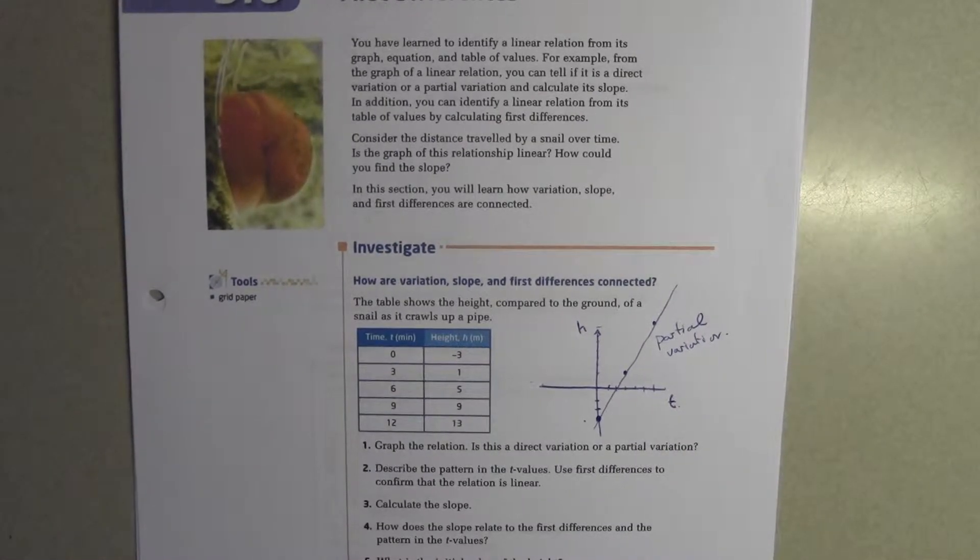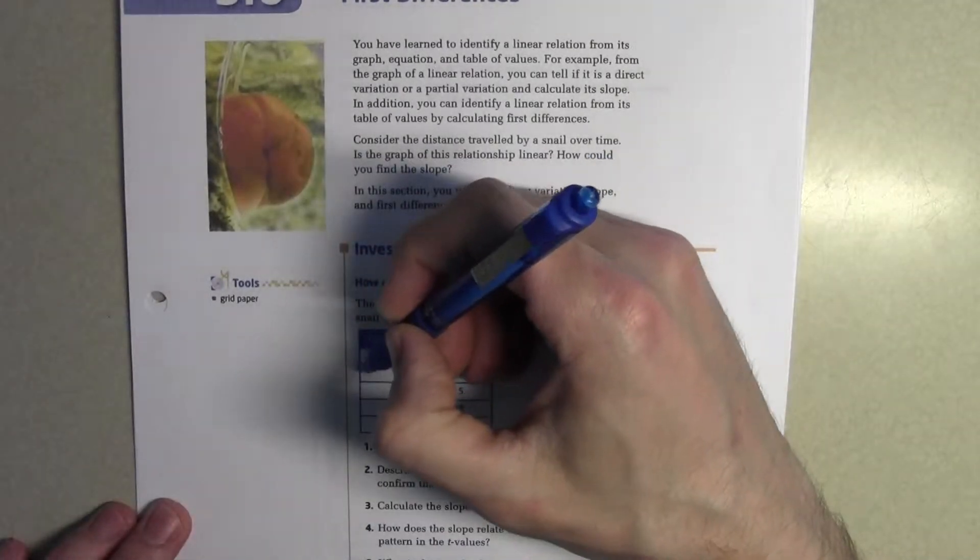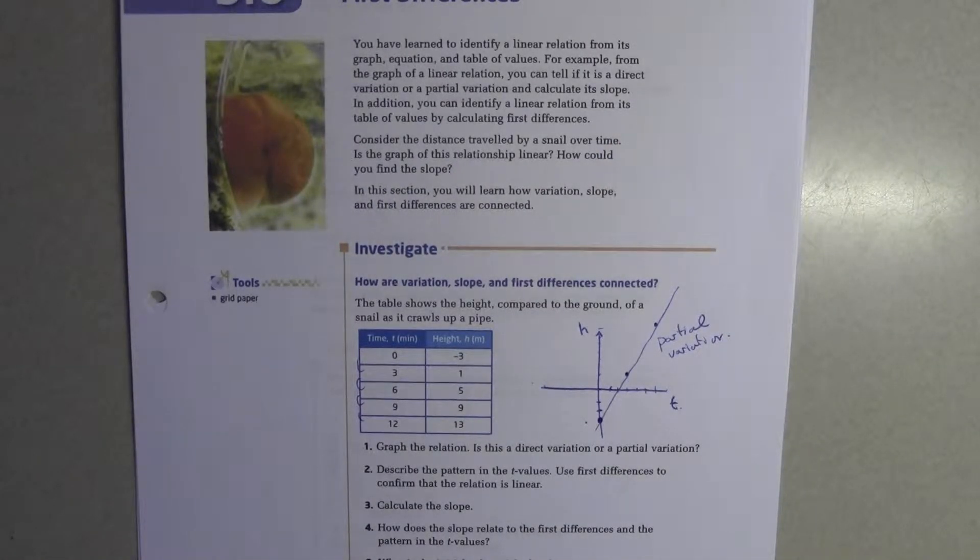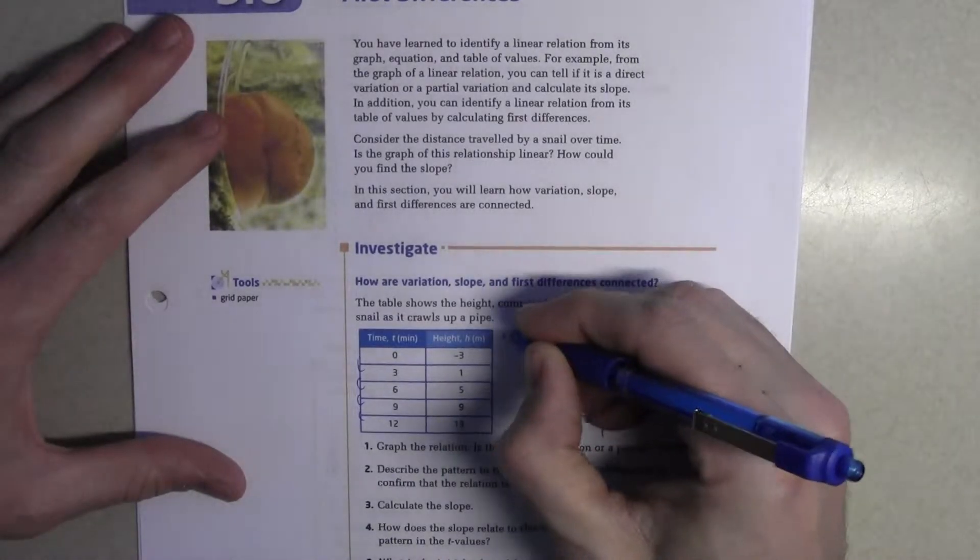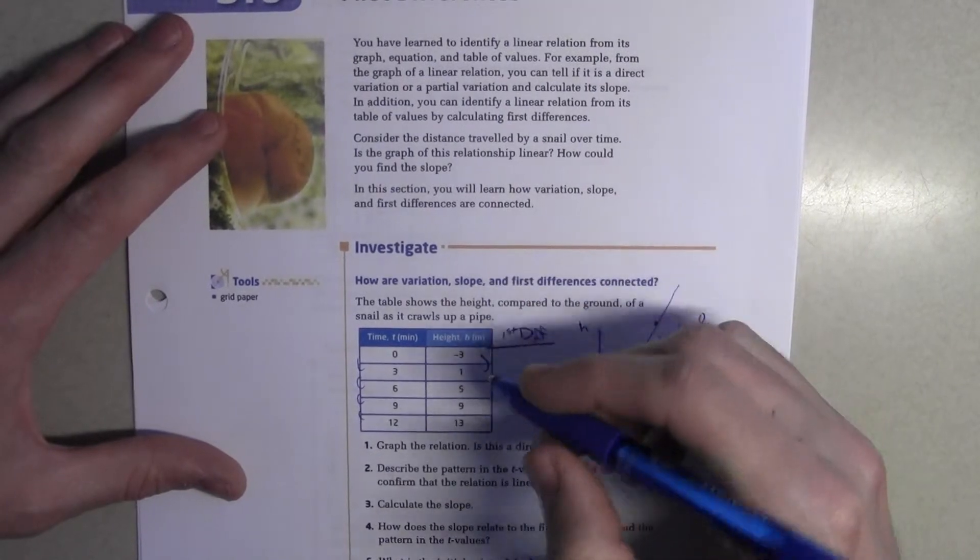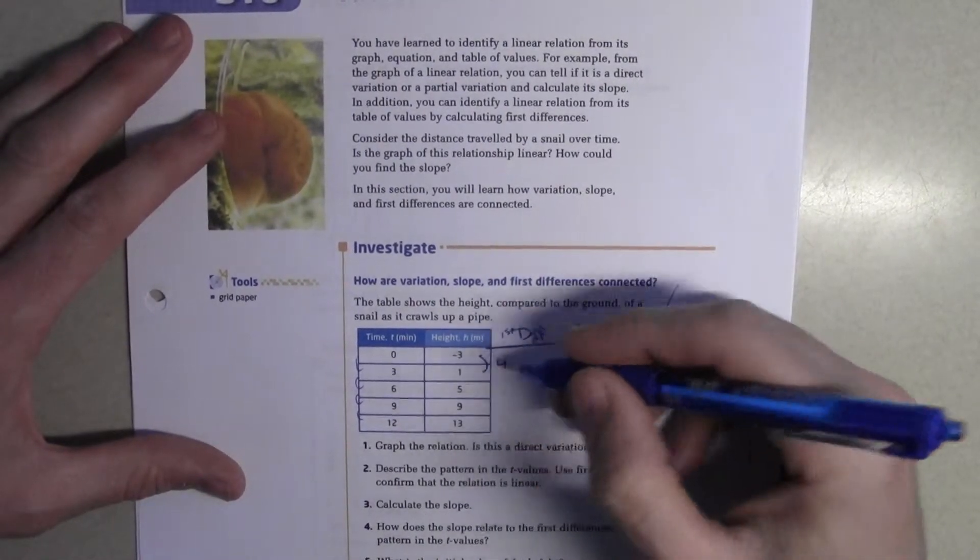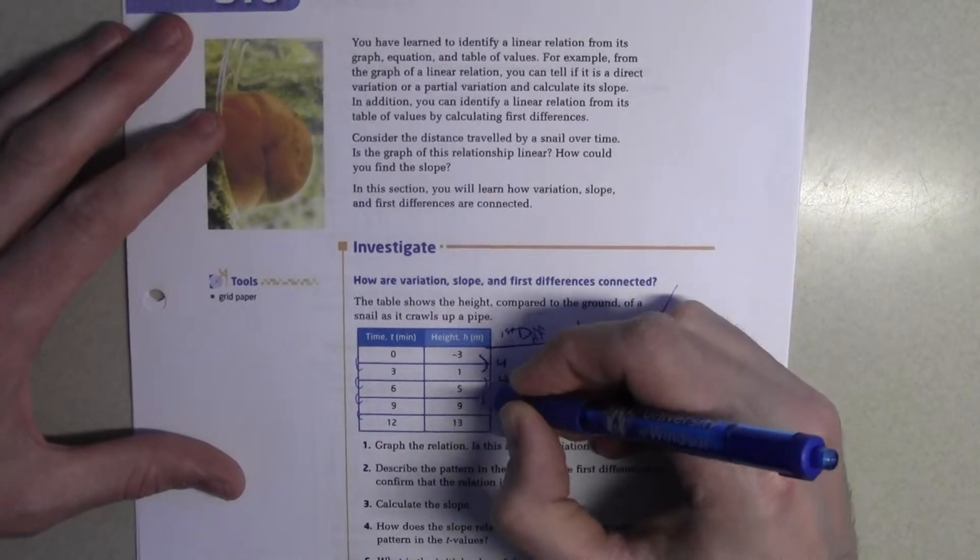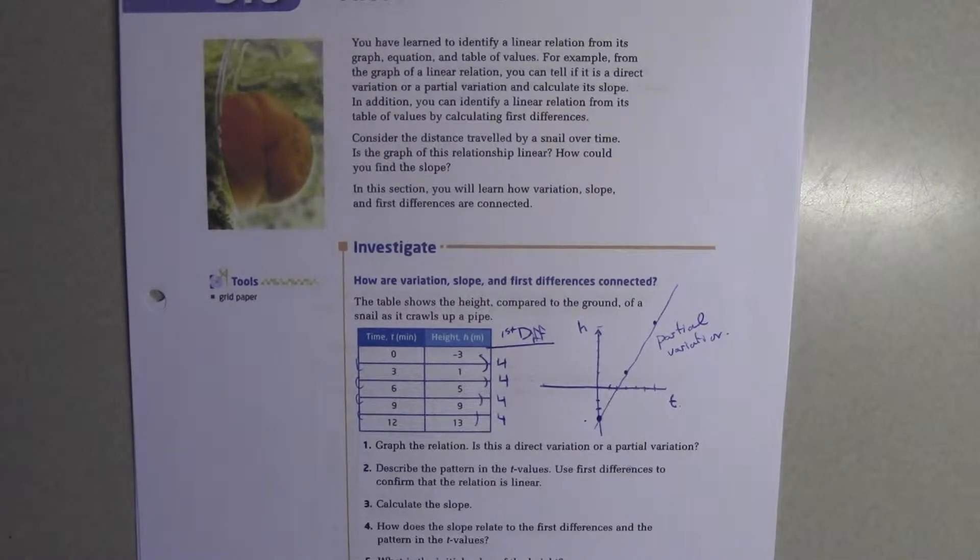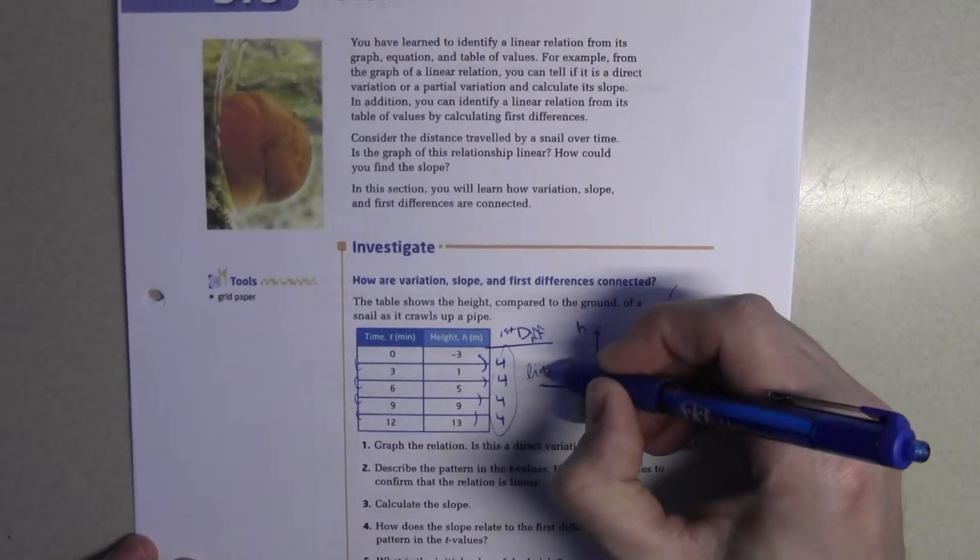Describe the pattern in the t-values. Use first differences to confirm that the relation is linear. So, what's the pattern in the t-values? Tim? It goes up by three each time. Good. It goes up by three each time. So, more importantly, it's consistent, the amount that it's going up by time. Next, it says, use first differences. So, we know how to do that. First differences. Go here and put them between. So, one plus three is four. Five minus one is four. Nine minus five is four. And thirteen minus nine is four. Alright. So, because all first differences are the same, we know then that it's a linear relationship.